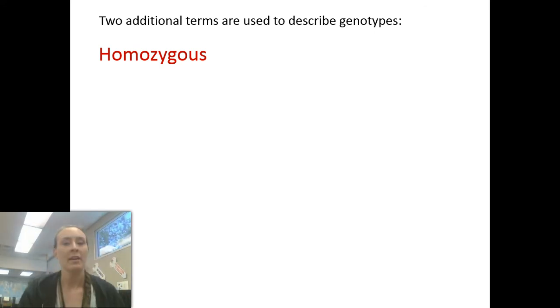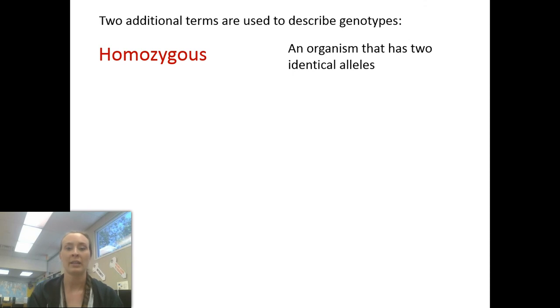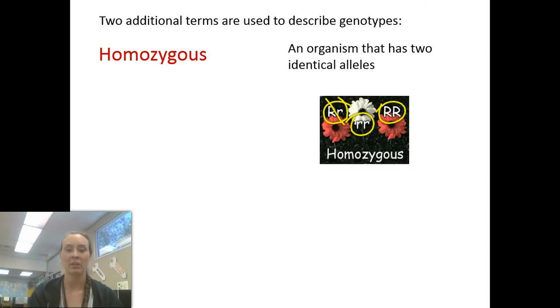We have two more terms used to describe genotypes. The first is homozygous. A homozygous organism has two identical alleles. Looking at the picture here, an example would be two of the same dominant allele or two of the same recessive allele.